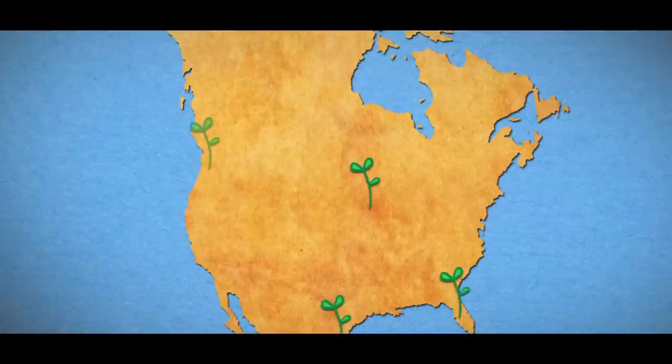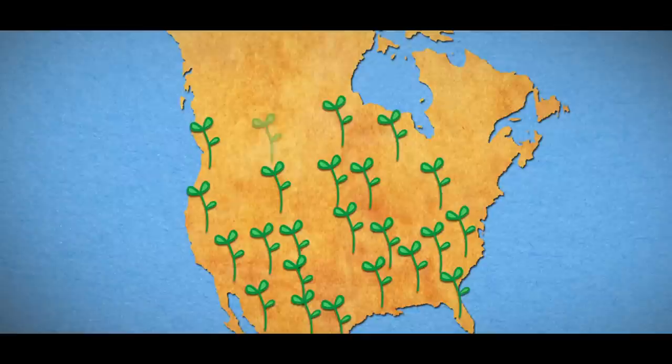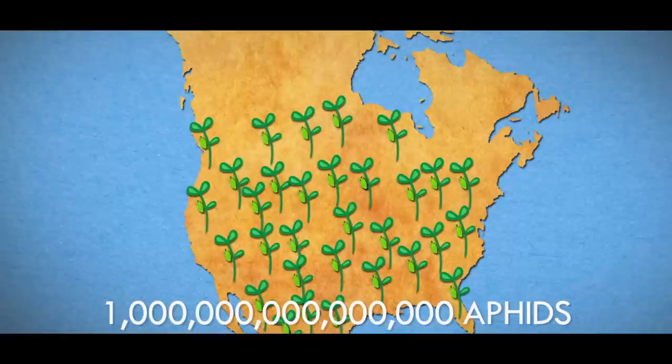Now, when we get to insects, the numbers start to get a little hard to imagine. For instance, if we counted all the aphids on all the soybean plants grown just on North American farms, we would find as many as a quadrillion aphids. And social insects take it to another level.